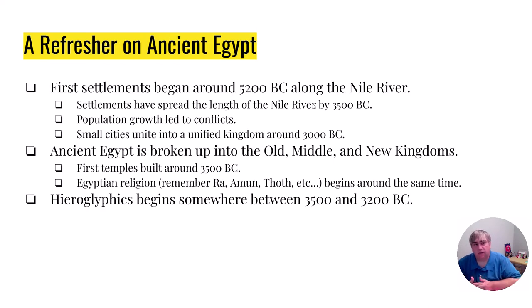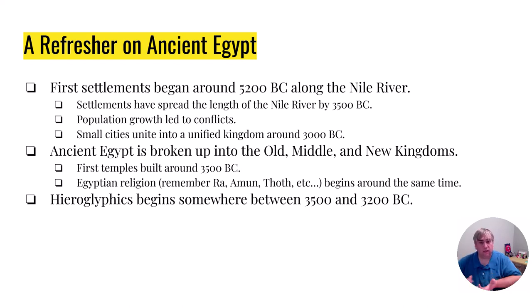Ancient Egypt — that's Africa too. One of the first large-scale civilizations of human history was ancient Egypt. The first settlements in Egypt are somewhere between 5,000 and 5,200 BC. You have the Egyptian people spreading along both sides of the Nile River. You have the Old Kingdom, the Middle Kingdom, the New Kingdom. You've got Ra and Amun and the pyramids, the Sphinx. And then of course hieroglyphics were created, which tells us all about the ancient Egyptians.